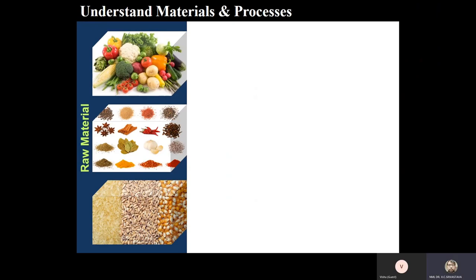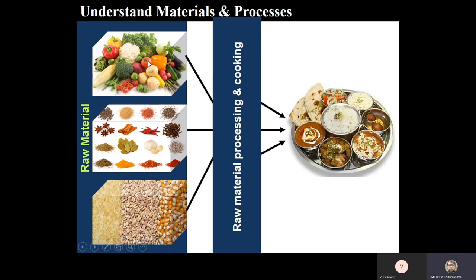In the picture you are looking at, we have raw materials for food — cereals, spices, and vegetables. These are the raw materials for our food. From the raw materials to food, we process and cook them, and finally we get the food we eat. Food is a product. From the raw materials — the ingredients — we process them to get something. Now, what about the product? Whether it is acceptable to you as a customer or not? How do you decide?